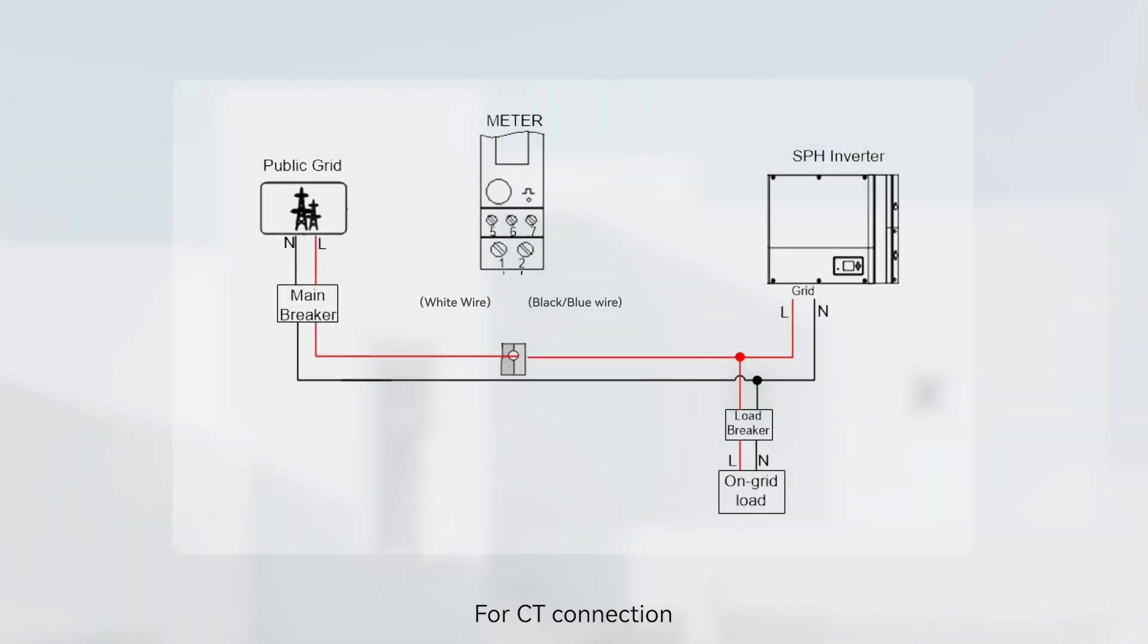For CT connection, connect the white wire and black wire of the CT to port 1 and port 2 of the smart meter. Then, put the CT across the live line of the grid, which is after the main breaker and before the load. Make sure the arrow of the CT points from grid to the load.